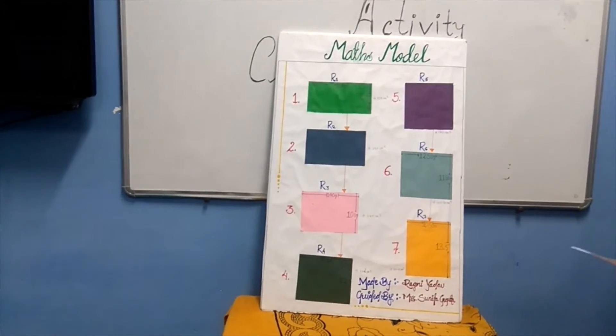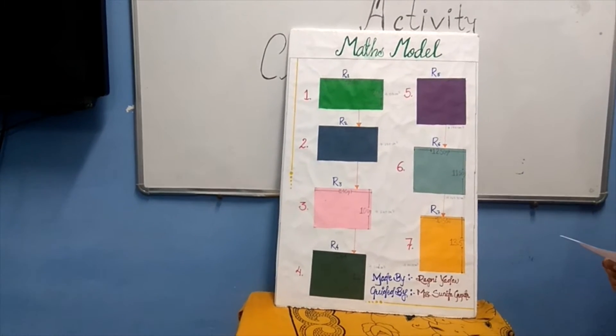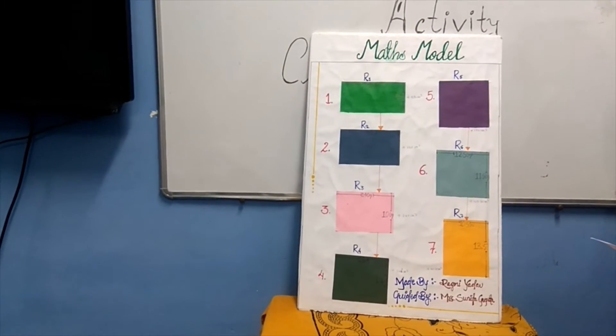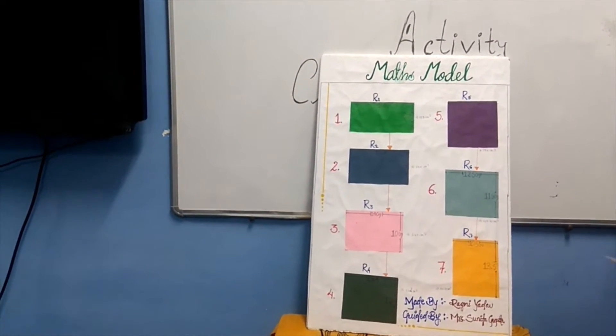Its objective is to verify that among all the rectangles of the same perimeter, the square has the maximum area.